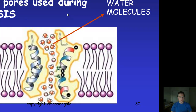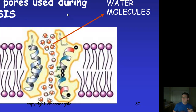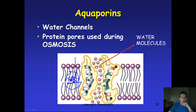Facilitated diffusion is still diffusion — it still happens naturally with no energy, from a high gradient to a low gradient. But some molecules are not allowed through the membrane on their own: polar molecules or large molecules require either channel proteins or carrier proteins to cross. For example, aquaporin is a specific protein that allows water to cross the membrane. Water is a very polar molecule, so it won't pass through the hydrophobic tails of the phospholipid bilayer — those tails repel it — so water must go through aquaporin.